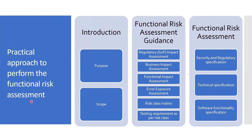Now we will discuss about the practical approach to perform the functional risk assessment. The first section is the introduction, where we need to define the purpose and scope. In the purpose section, we should cover the detailed risk assessment against the user requirement specification to determine the level of validation activities. In the scope section, it should cover the functional risk assessment for which software it is being performed — that is software name and version number — covering all security and regulatory specification and also the technical and software functionality specification.